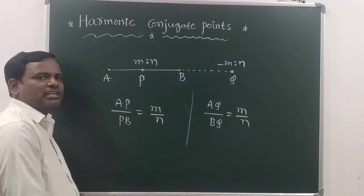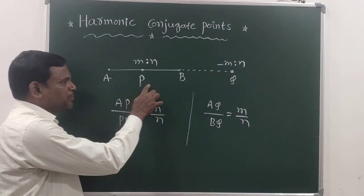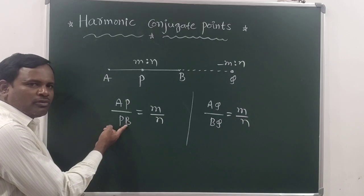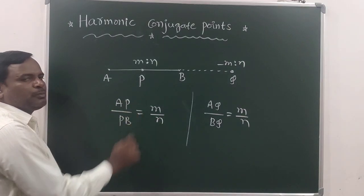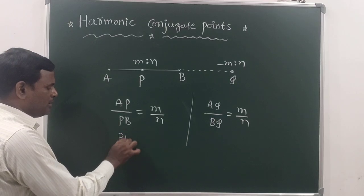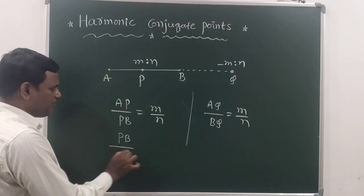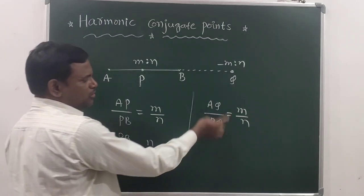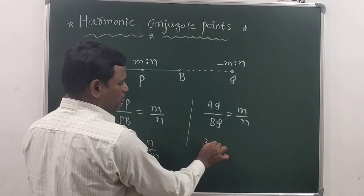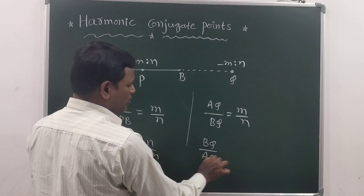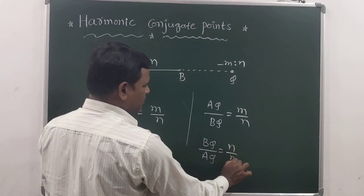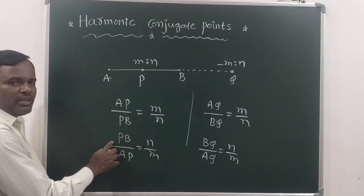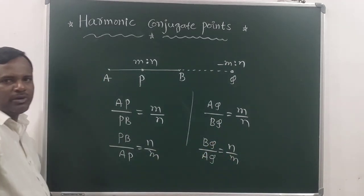Now I will tell you the reason why we call P and Q harmonic conjugate points. Take reciprocal on both sides, so that you get PB by AP which is equal to N by M. And here also take reciprocal on both sides, so BQ by AQ is equal to N by M.